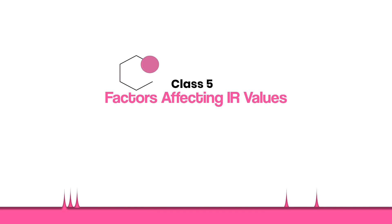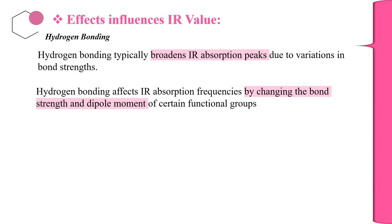In this particular class we talk about hydrogen bonding and the inductive effect in detail. Hydrogen bonding is one of the key factors that actually influences the IR value of the OH group, as well as the NH group and the carboxylic acid OH group.